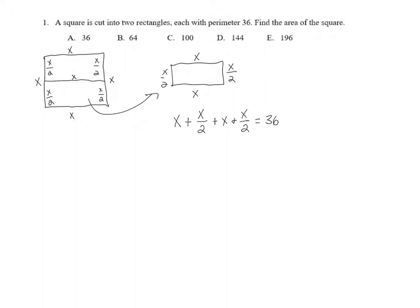So we know that x plus x halves plus another x plus another x halves has to equal 36. But if we combine like terms, x halves plus x halves is x plus another x and another x gives us 3x equals 36. And if we divide by 3, that tells us that x equals 12.